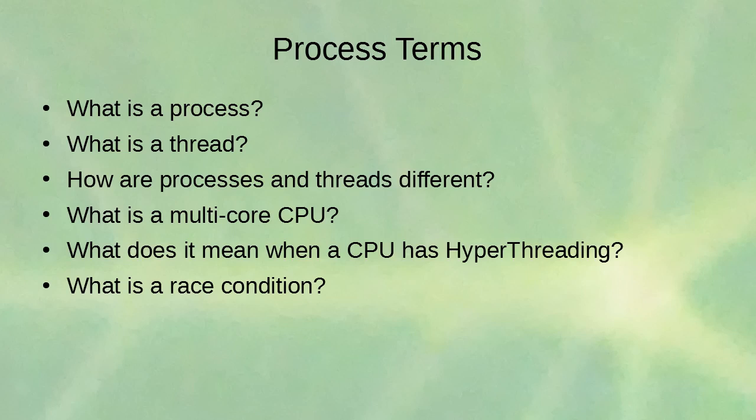The program counter continuously moves through and the CPU executes these commands. Each one of these programs loaded into memory is a process. Within those processes you might have different pieces of execution, and those different pieces of execution within the same process can be called threads. So if you have a process that has threads, your process switches between different portions of the process to do different things.